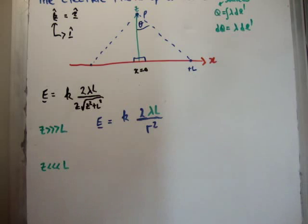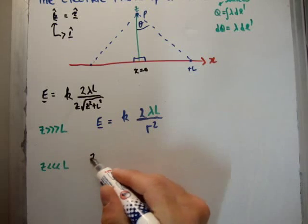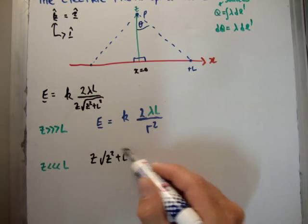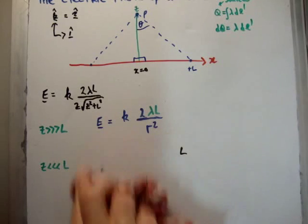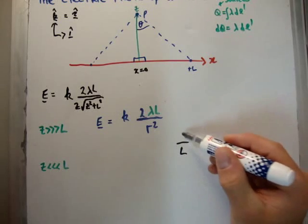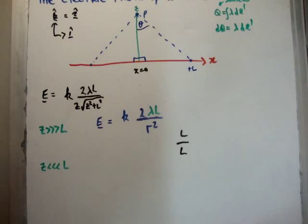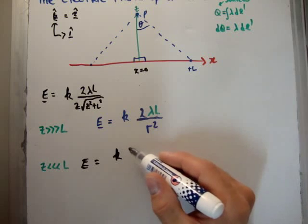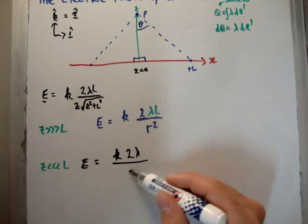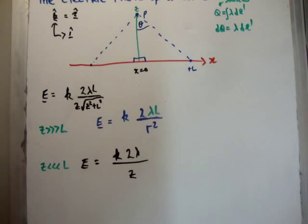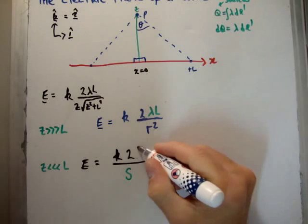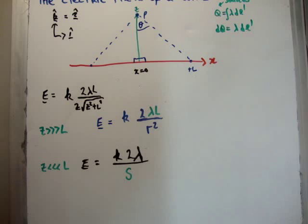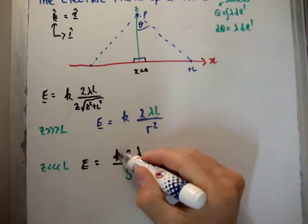Conversely, when L is much greater than z — the wire is very long compared to the distance — z drops out of the square root term, giving sqrt(z² + L²) ≈ L. The L on the top and the L on the bottom cancel, and what remains is the electric field E = k × 2λ / z, or more generally 2λ / s where s is the distance from the wire. That is the electric field of an infinite wire — a very important result we will be using frequently.